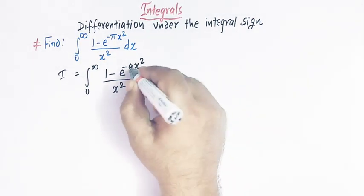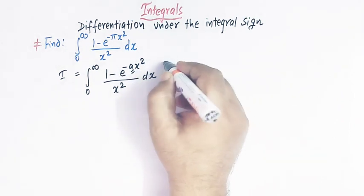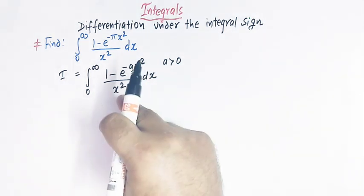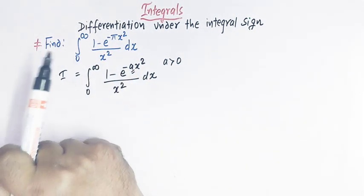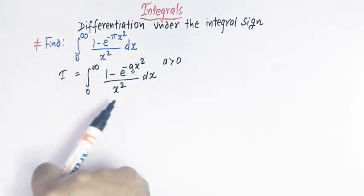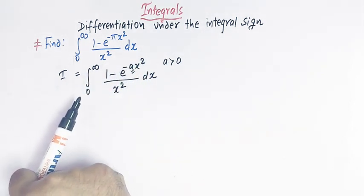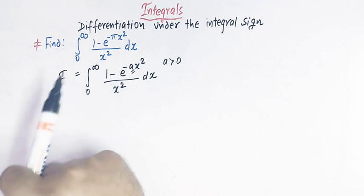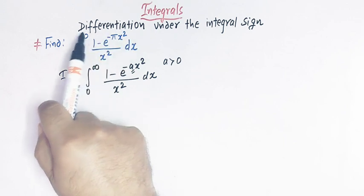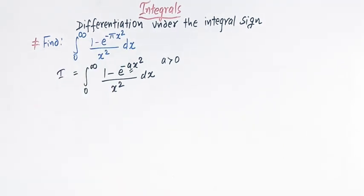Here a is our parameter or variable, and moreover a is greater than 0. Once we complete all the steps regarding this integral, in the final result we can substitute a equal to π so that we can obtain the value of the given integral.